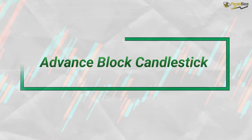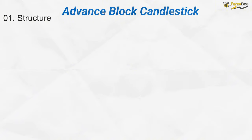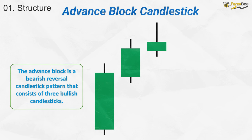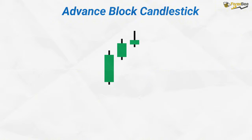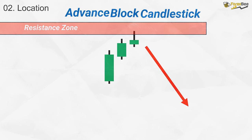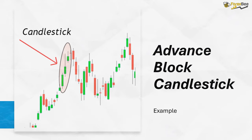Now let's talk about the advanced block candlestick pattern. Its structure consists of three consecutive bullish candles. The first is a strong bullish candle reflecting ongoing buying pressure. The second candle is also bullish but smaller, often with a long upper wick, suggesting that buyers are starting to struggle. The third candle is much smaller with another long upper wick, indicating exhaustion in the uptrend and fading bullish strength. This pattern usually appears at the top of an uptrend and serves as a warning that upward momentum is weakening, signaling a possible bearish reversal. In the example, we can see the advanced block pattern forming during an uptrend, and the trend changes from bullish to bearish.